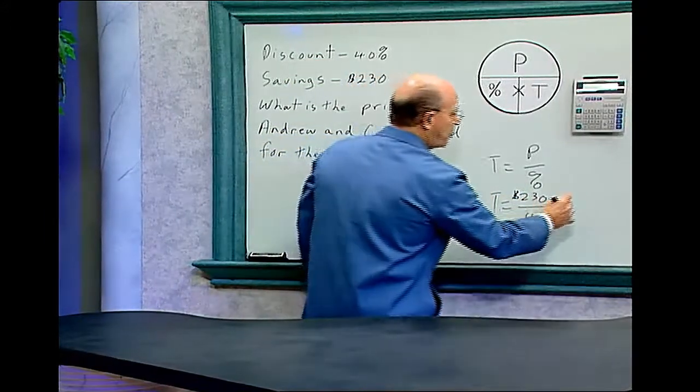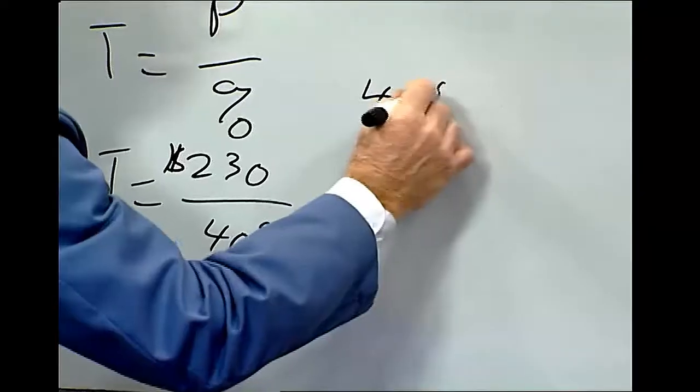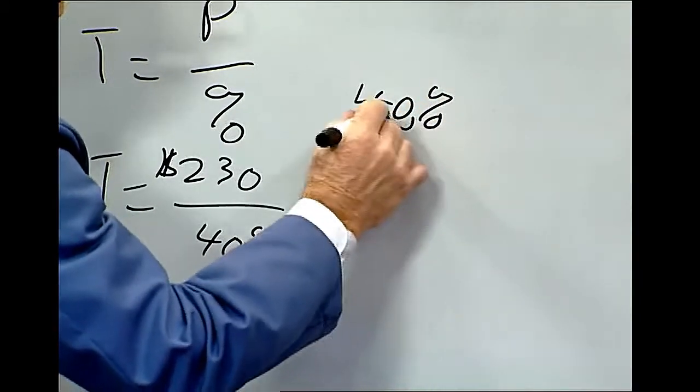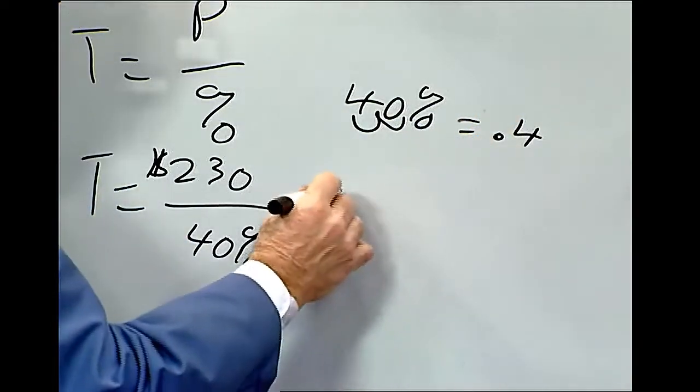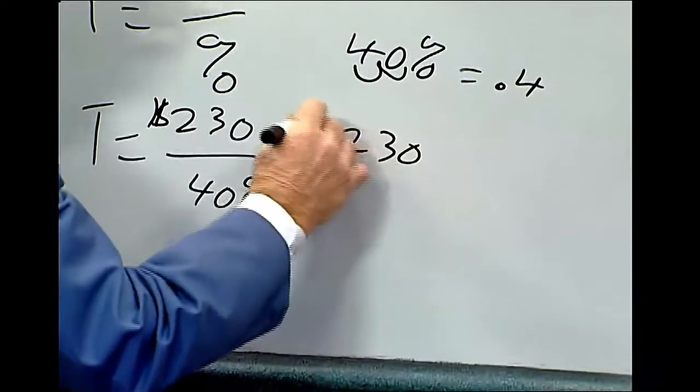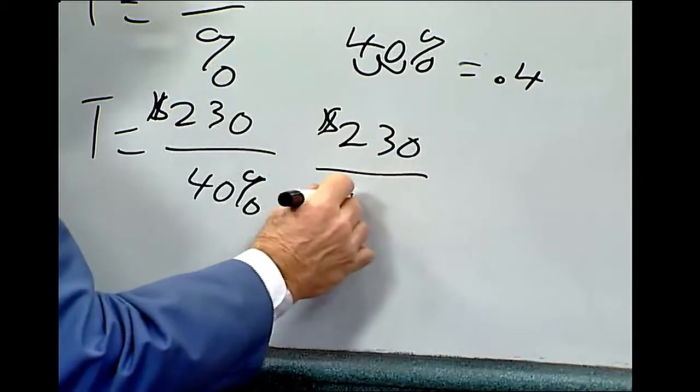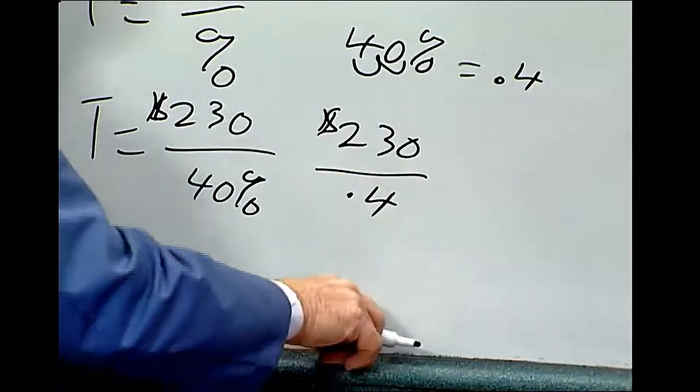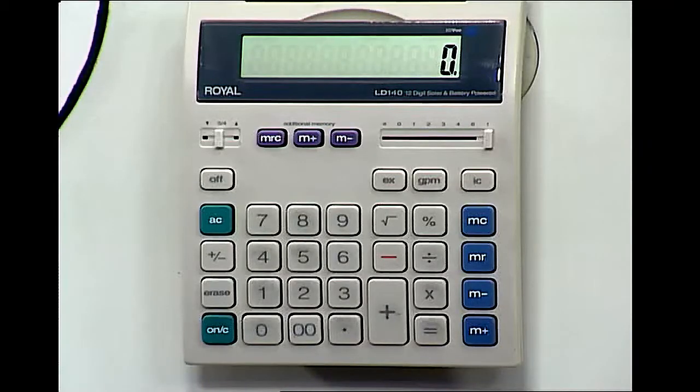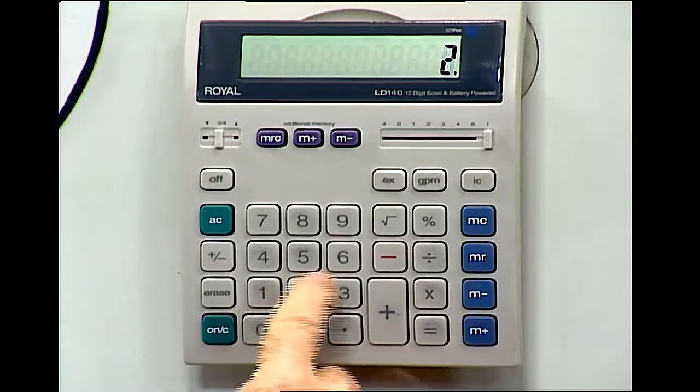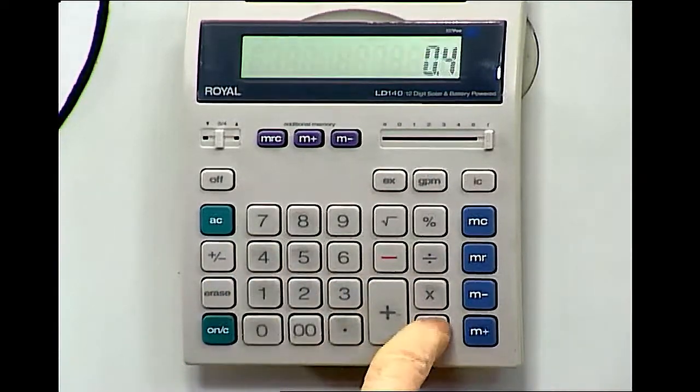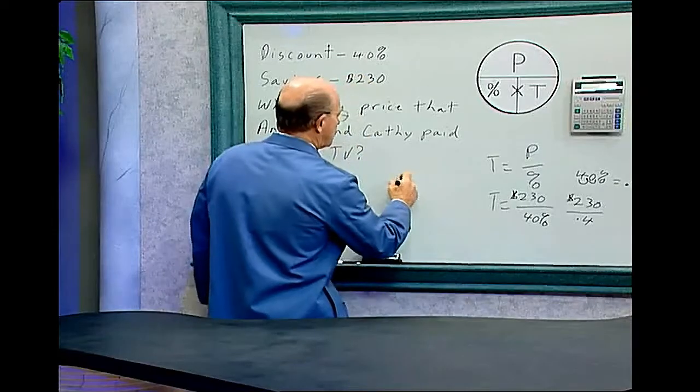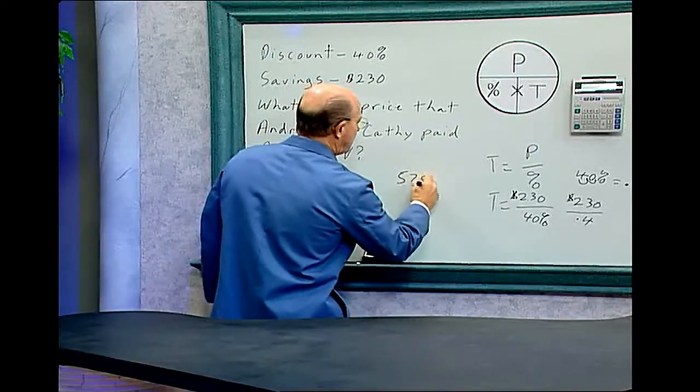Now we can convert the 40 percent into a decimal. Just move it two places, so that will equal .4. So it's $230 divided by .4. So the price is $575.